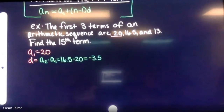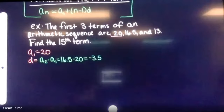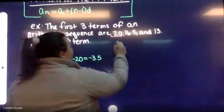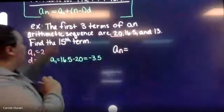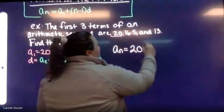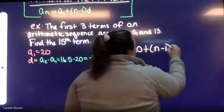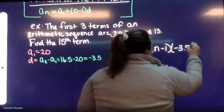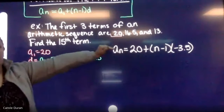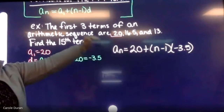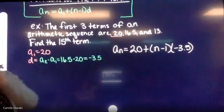Now I have enough to write the explicit rule: a(n) equals 20 plus n minus one times negative 3.5. I can then use this to find the 15th term.